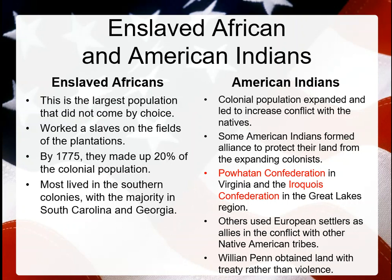Of course, the largest population that didn't come by choice would be enslaved Africans. They worked as slaves in the fields of plantations. By 1775, they made up 20% of the colonial population. Most lived in the southern colonies, with the majority in South Carolina and Georgia — places where plantation agriculture, especially indigo and rice, continued to thrive.